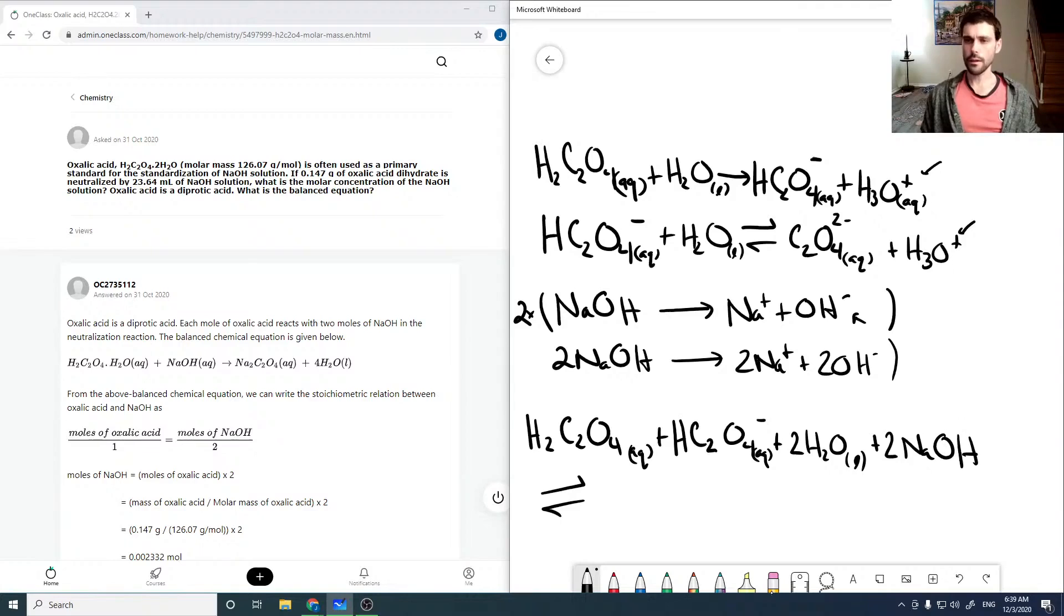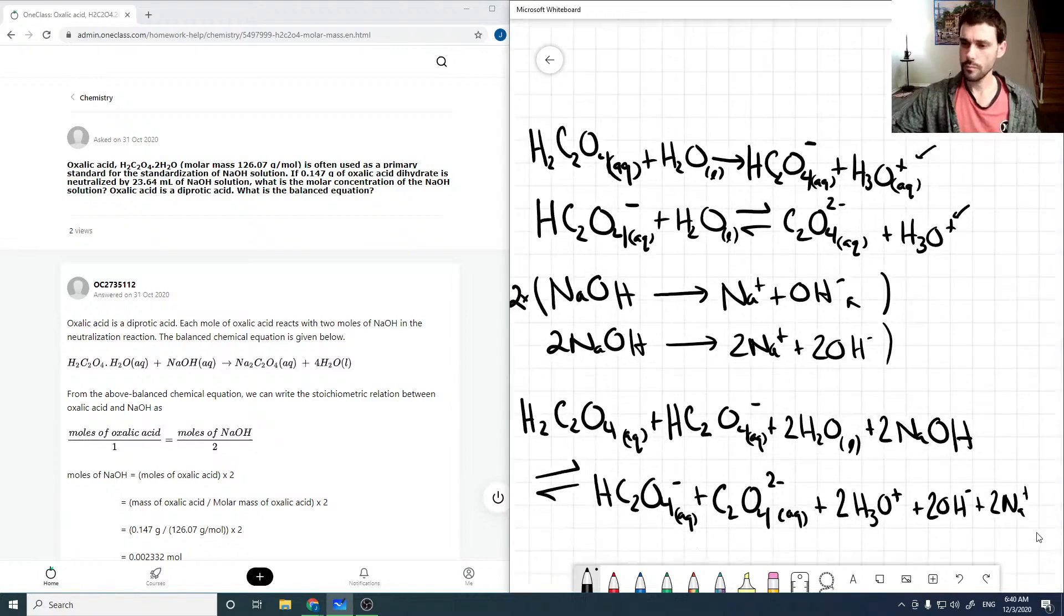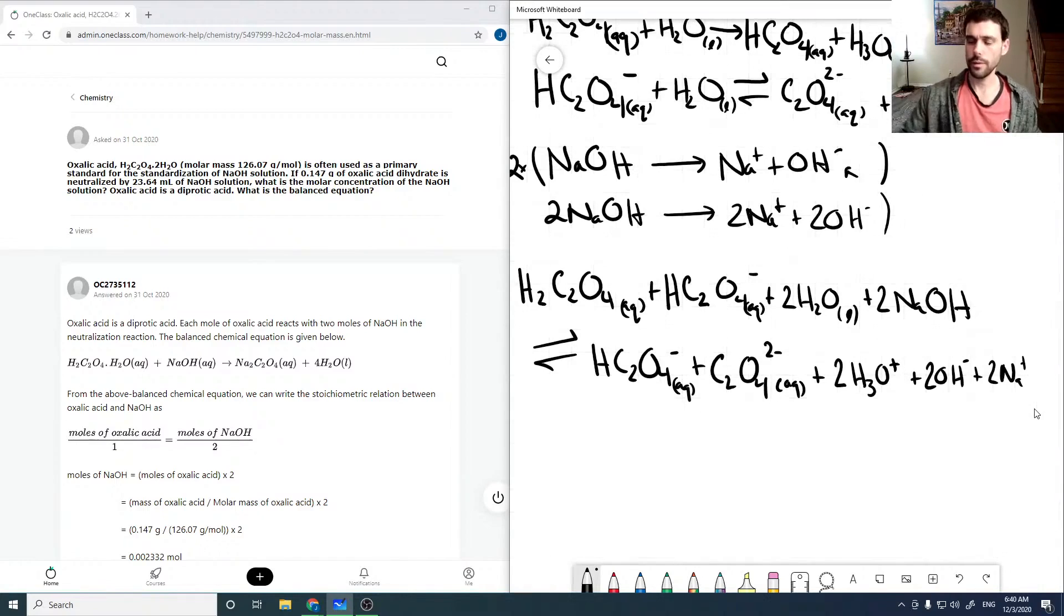And then the product side is going to be HC2O4 minus plus C2O4 2 minus. And we're going to get 2 H3O pluses, 2 OH minuses, and 2 Na pluses. Now, our H3O plus and OH minus are going to combine to give us 4 waters. So that's 4 H2O.